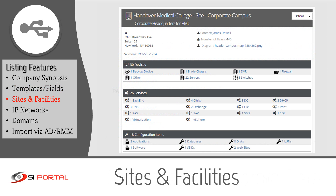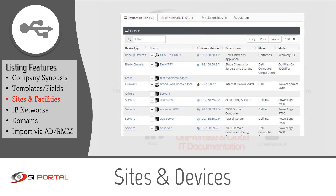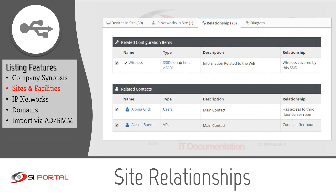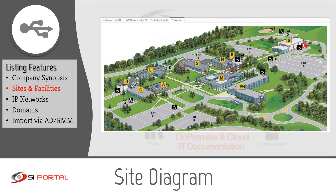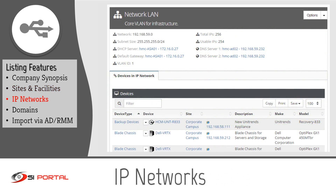When documenting a site or a facility, you get general information and a synopsis screen showing the objects residing in that site or facility. A complete listing of all existing devices is provided. Tabs are provided to list the IP networks and the relationships — here we see the wireless info for the site as well as key contacts. While editing a site, you can also designate a document as being the diagram of the site and, if it is an image, the portal will display it on the screen. Here we see an IP network with its relevant information, as well as all the IPs on that network. Some devices may be listed multiple times, as devices can have multiple IP addresses defined in the portal.